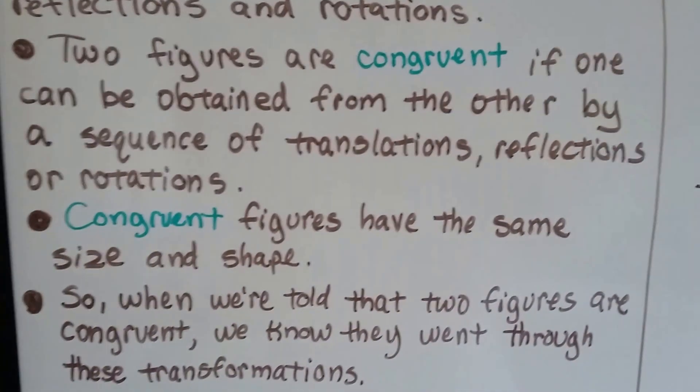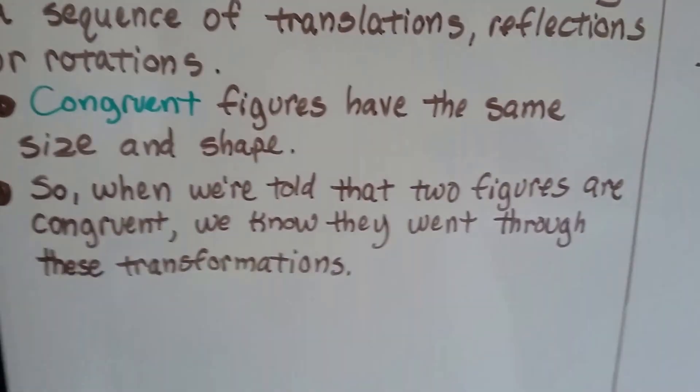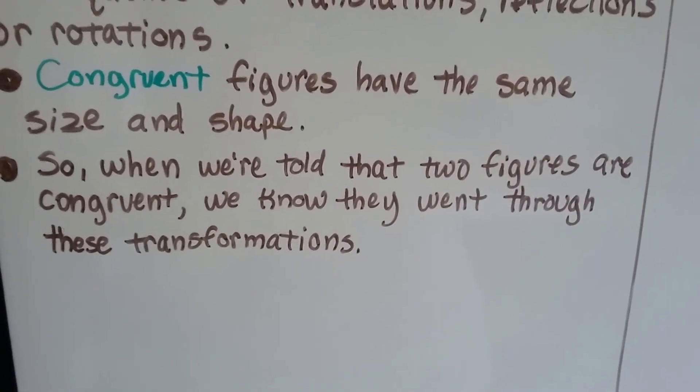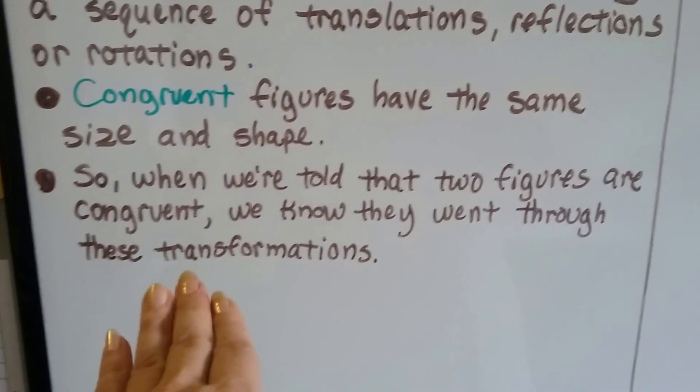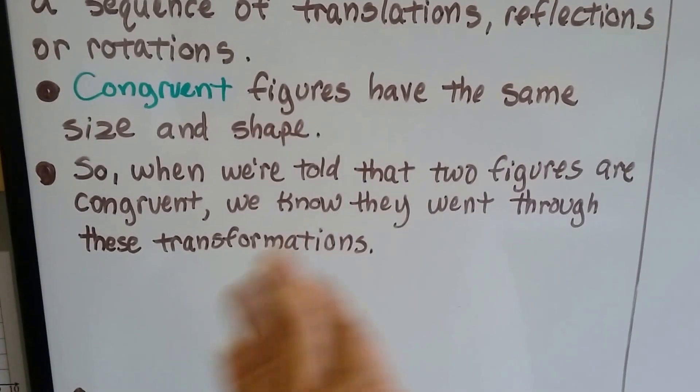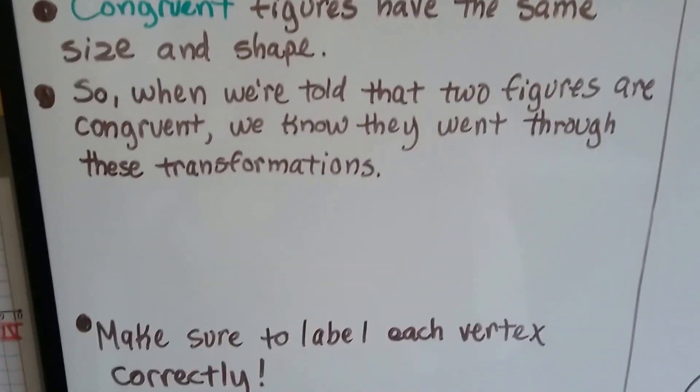Congruent figures have the same size and shape. So when we're told that two figures are congruent, we know that they went through these transformations on the coordinate plane. If you look at one and look at another one, and we know that they're congruent, we know that they went through this transformation.